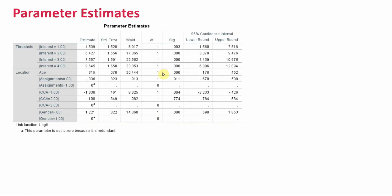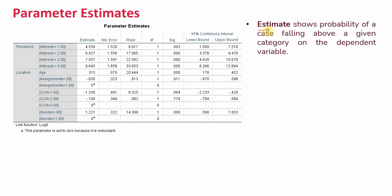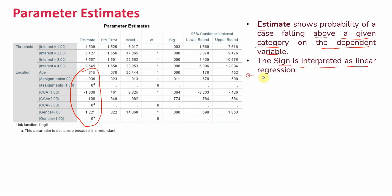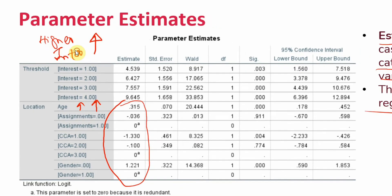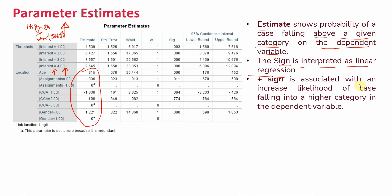The next important table is Parameter Estimates. We use this to assess whether the independent variables have a significant impact on the dependent variable, interest. The estimate shows the probability of a case falling above a given category on the dependent variable. The sign is interpreted as in linear regression: a positive sign is associated with an increased likelihood of the case falling into a higher category on the dependent variable.